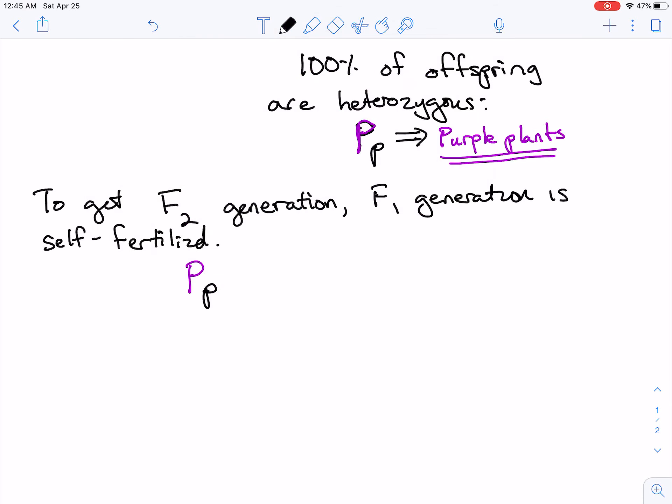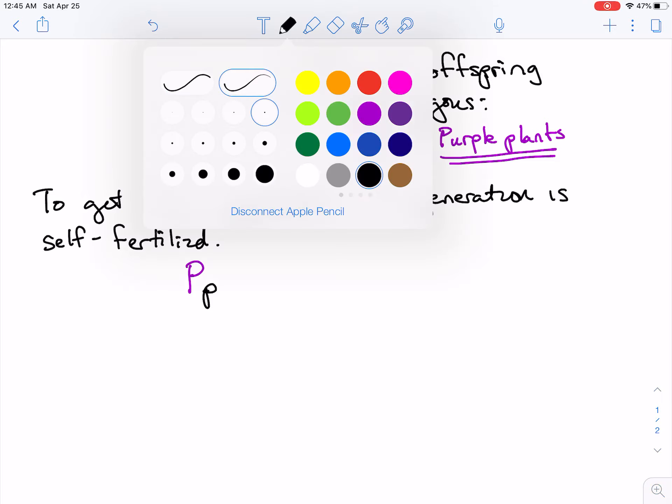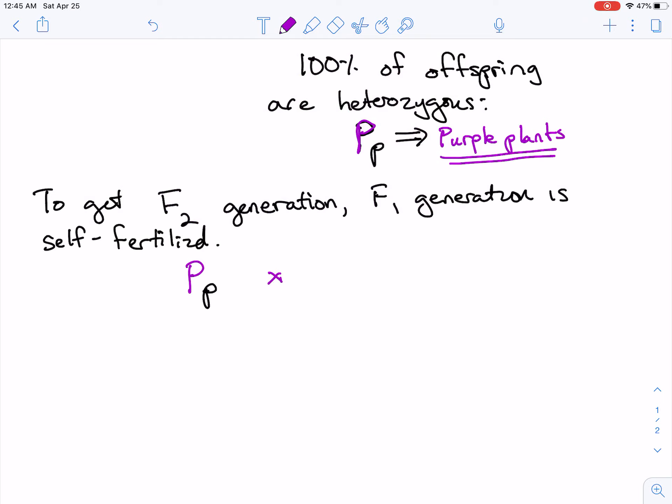So we cross big P, little p. Remember, it's diploid cells, right? Cross - you're self-fertilizing the plants, so you're crossing them together.